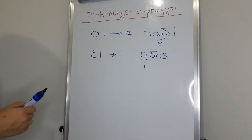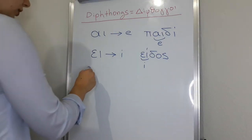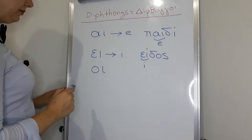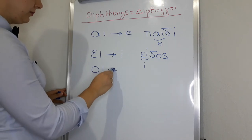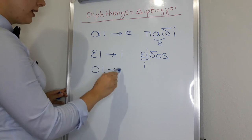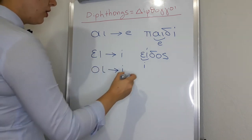Next diphthong is omikron yota. Omikron yota. This is pronounced like this one, e. Oikogeneia.